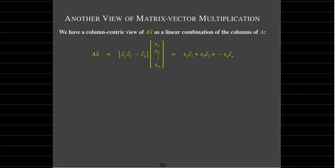We found a basis for W-perp by finding the null space of a matrix. Let's examine that null space connection more clearly. We're going to revisit matrix vector multiplication. It's almost always useful to consider the result as a linear combination of the columns of A — the column view serves us well. However, we could also look at it through a row-centric point of view.